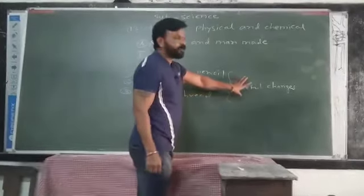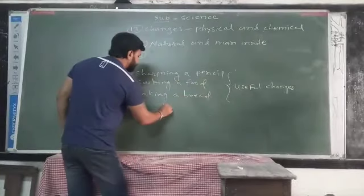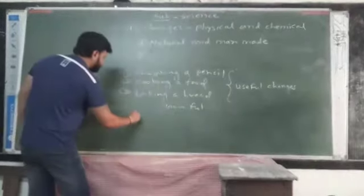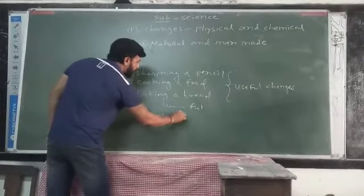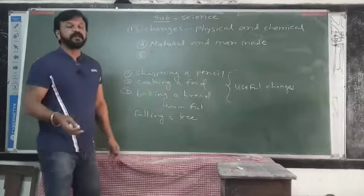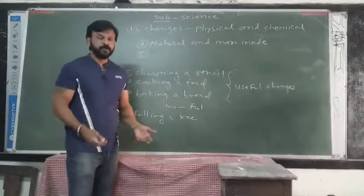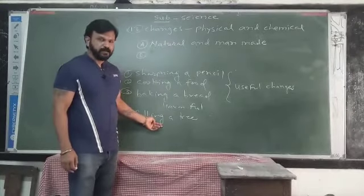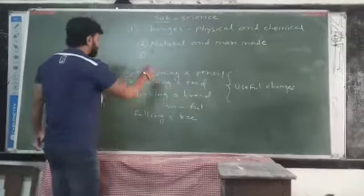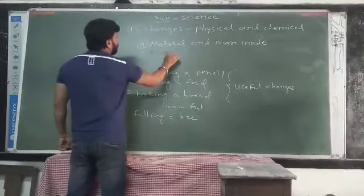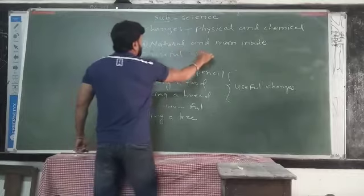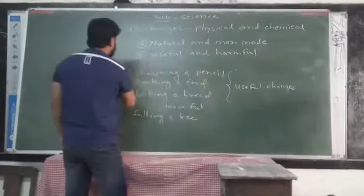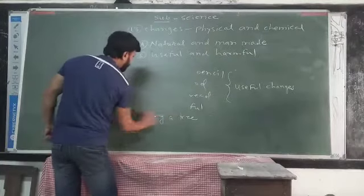Now the opposite of useful is harmful. Some changes are harmful. For example, falling a tree. If a tree suddenly falls in front of you, you may get hurt. So this is a very harmful change for you, right. So useful and harmful changes. So second is useful and harmful change. If the examples are given, you can classify them into useful and harmful changes.